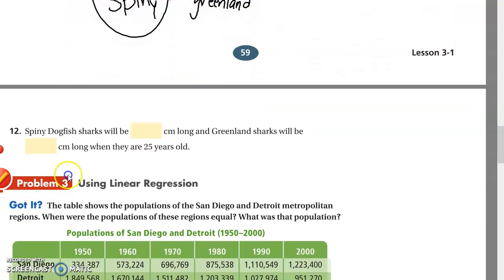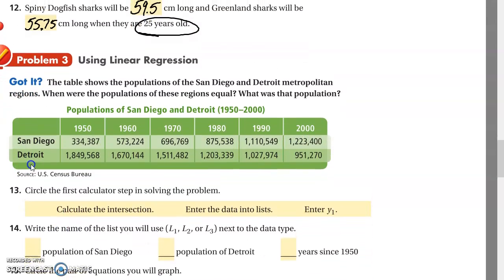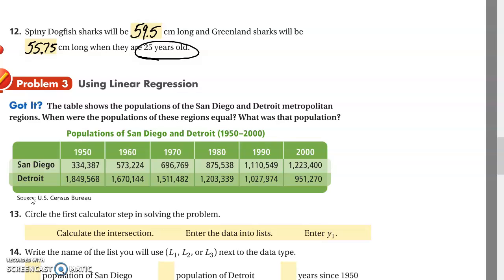Okay, number 12. Next question. Spiny dogfish sharks. And this is the next page so please turn your page to page 60 now. Spiny dogfish sharks will be 59.5 centimeters long and Greenland sharks will be 55.75 centimeters long when they are 25 years old. And remember, this is not the age they die, but this is just an age they just made up. So you kind of figured out how long they are. If you see one in the ocean, these scientists will measure it with some kind of satellite or drone using technology. Then from that measurement, they'll make a guess at how old it is, which is pretty cool.